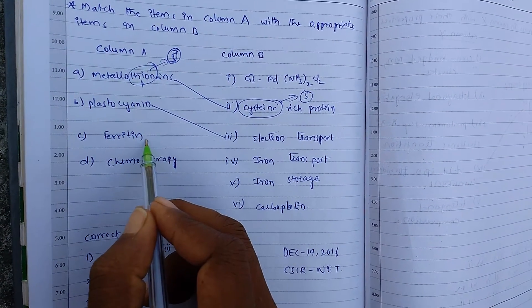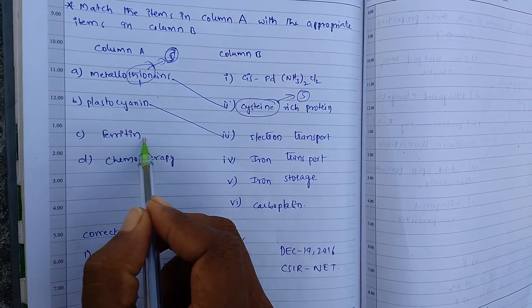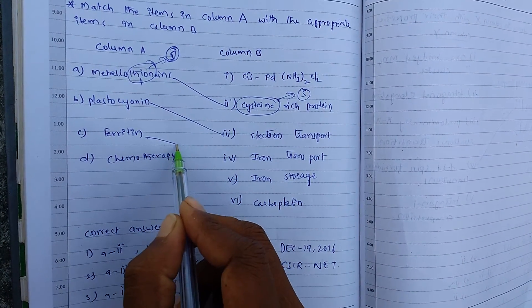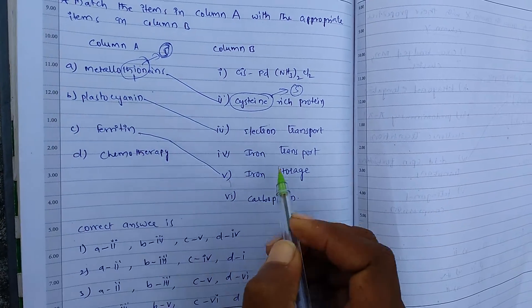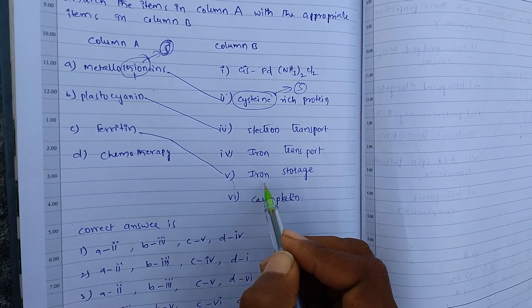And ferritin, it is an iron containing protein. And it has, it stores, it has storage capacity of iron. That means simply, it stores iron.